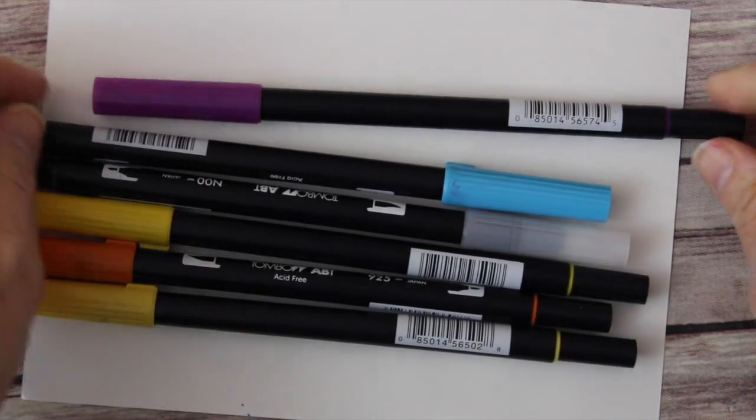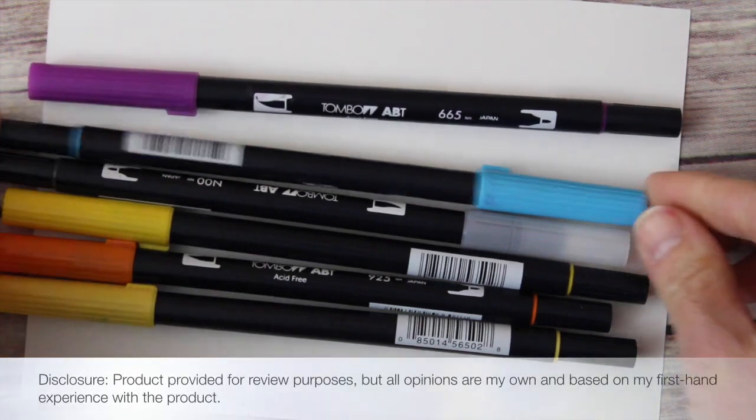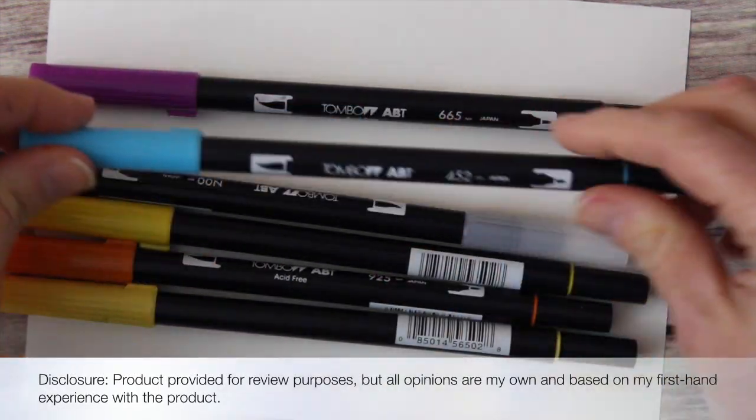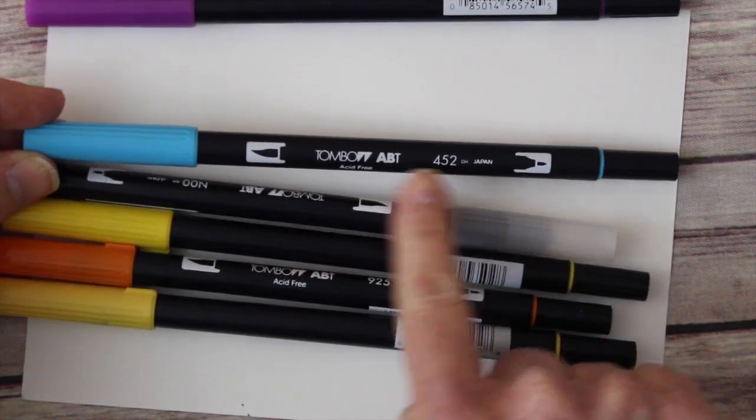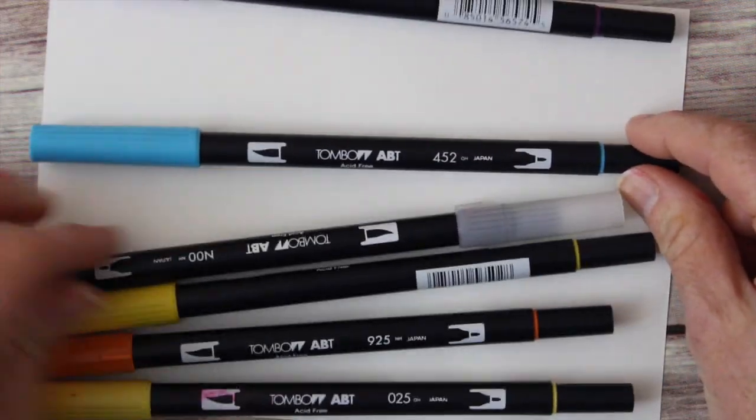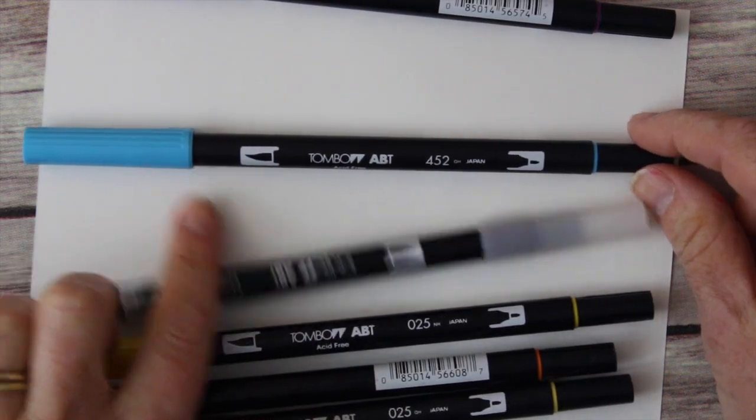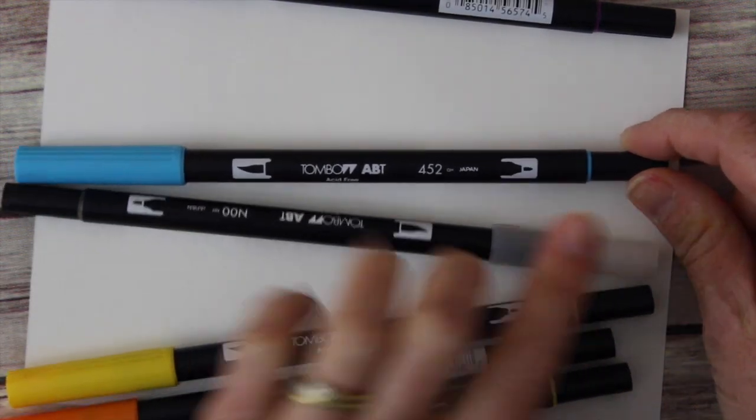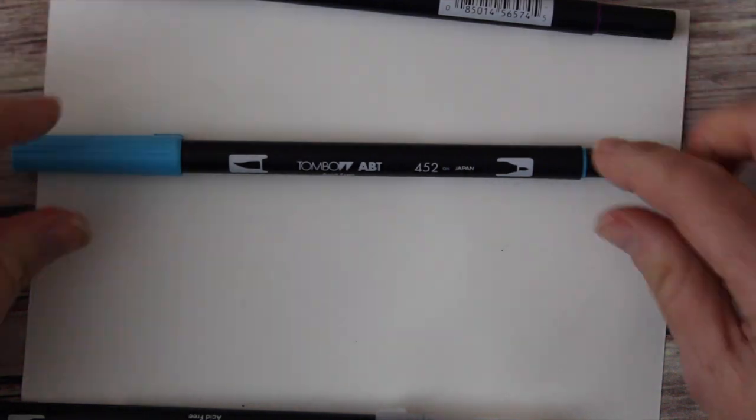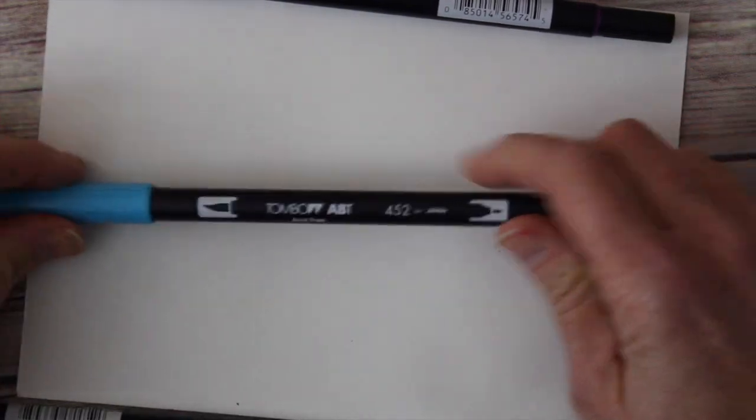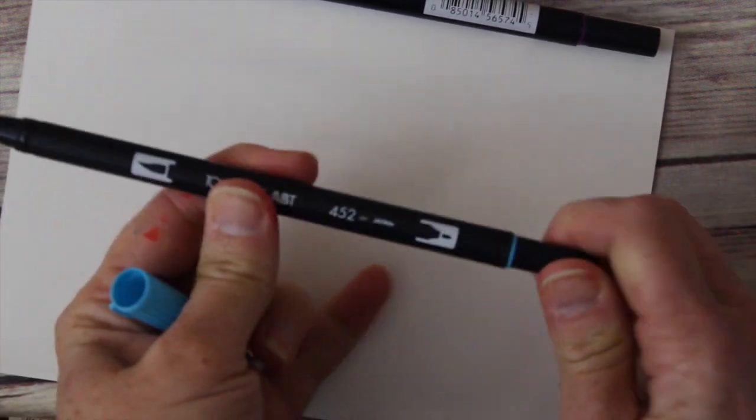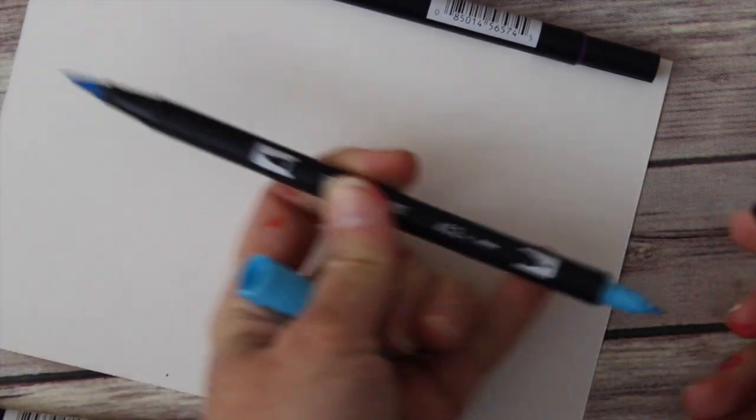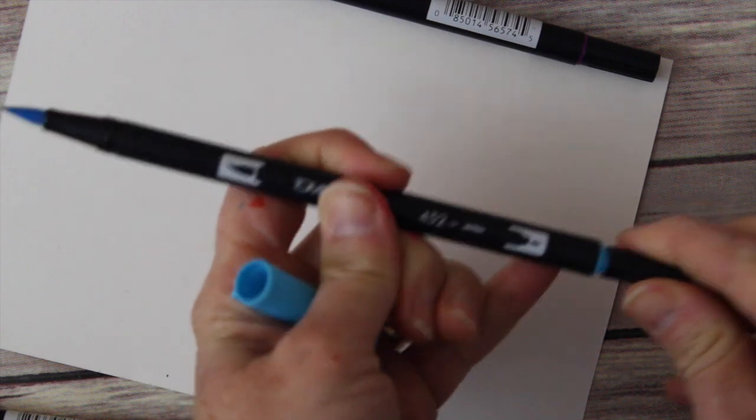Okay, so let's get started looking at the Tombow brush markers. They're labeled acid-free and on each one there's a number that tells you the color number. It's also on the cap and on this ring on the bottom. There are two nibs on each marker: one is a brush tip and the other is a fine tip.